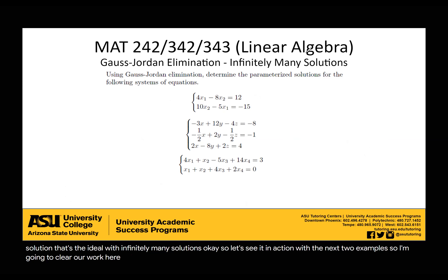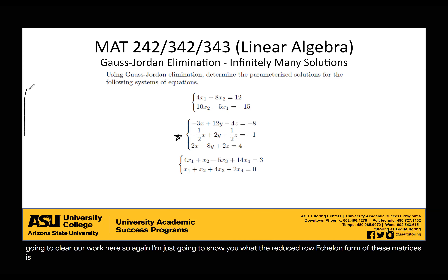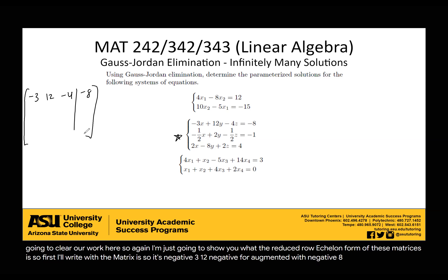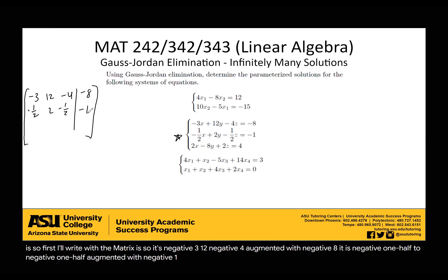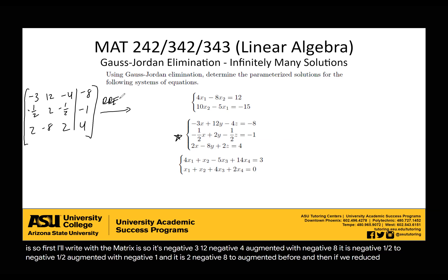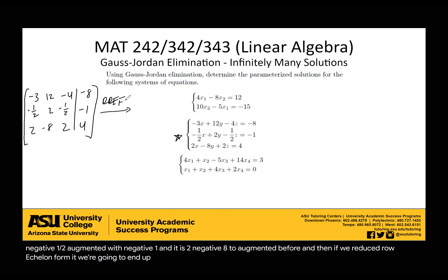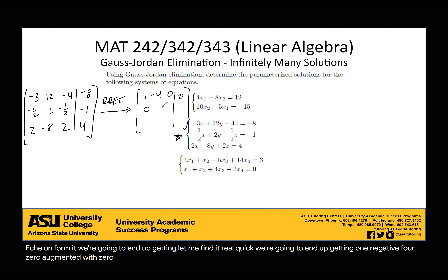I'm going to show you what the reduced row echelon form of these matrices is. The matrix is: row 1 is negative 3, 12, negative 4 augmented with negative 8; row 2 is negative 1 and a half, 2, negative 1 and a half augmented with negative 1; row 3 is 2, negative 8, 2 augmented with 4. After row-reducing to RREF, we end up with: row 1 is 1, negative 4, 0 augmented with 0; row 2 is 0, 0, 1 augmented with 2; row 3 is 0, 0, 0.